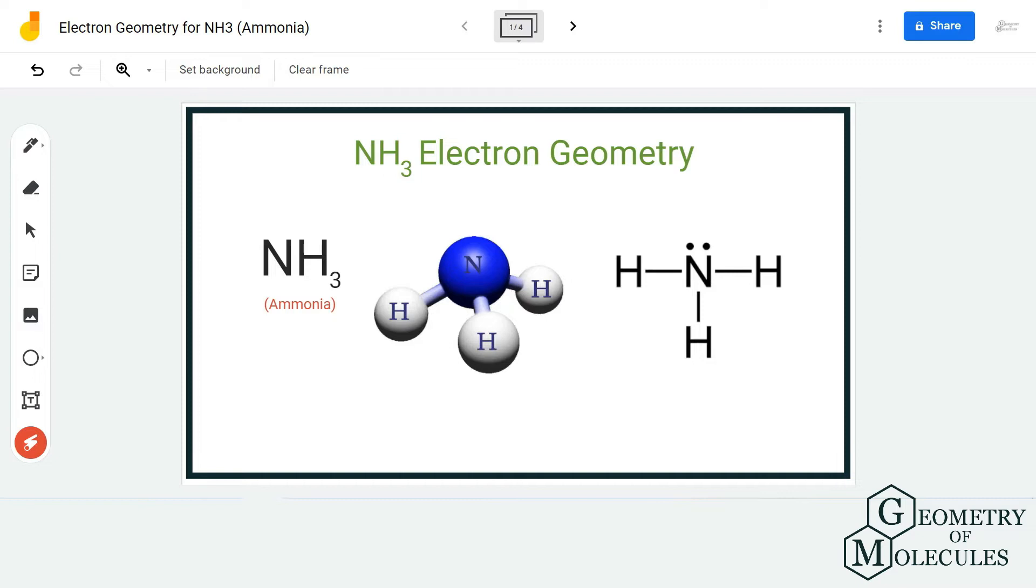Here's the Lewis structure of NH3, in which the nitrogen atom is in the center and it has a lone pair of electrons and is bonding with three hydrogen atoms.